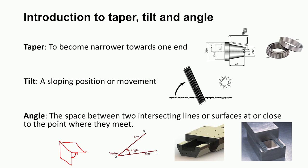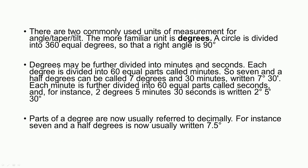If we take two lines OA and OB, they intersect at point O. The space between them is known as the angle. Similarly, two surfaces can form an angle — for example, machine tool guideways have sloping surfaces, and the inclination between them is the angle. These angles, tilts, and tapers are normally measured in degrees or radians.